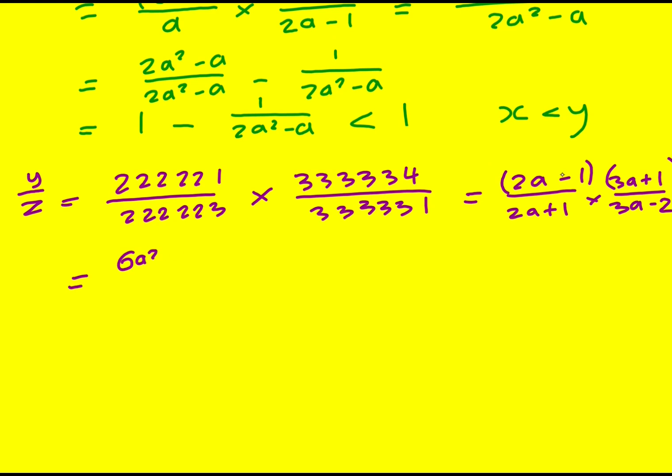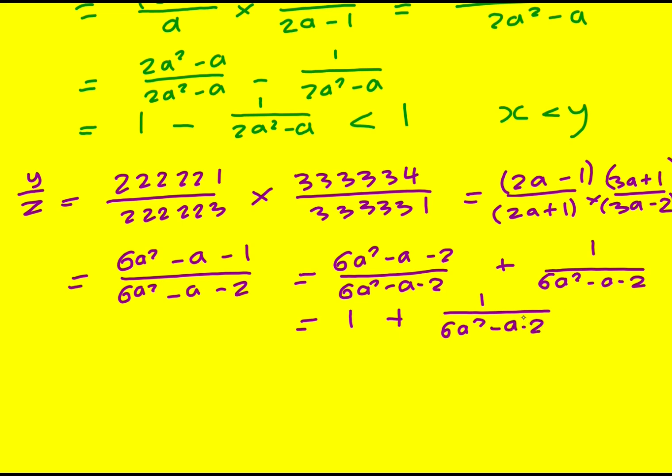Which gives me 6a squared minus 3a plus 2a, so that's minus a minus one, all over 6a squared. Then I've got minus 4a plus 3a, so another minus a, but now minus two. I can write that as 6a squared minus a minus two, and then add one, because that would be the same fraction, and then separate it into two. So that's one plus one over. Now for the a that we have in question, this is definitely going to be greater than zero, which means this is going to be greater than one, and therefore y is greater than z.